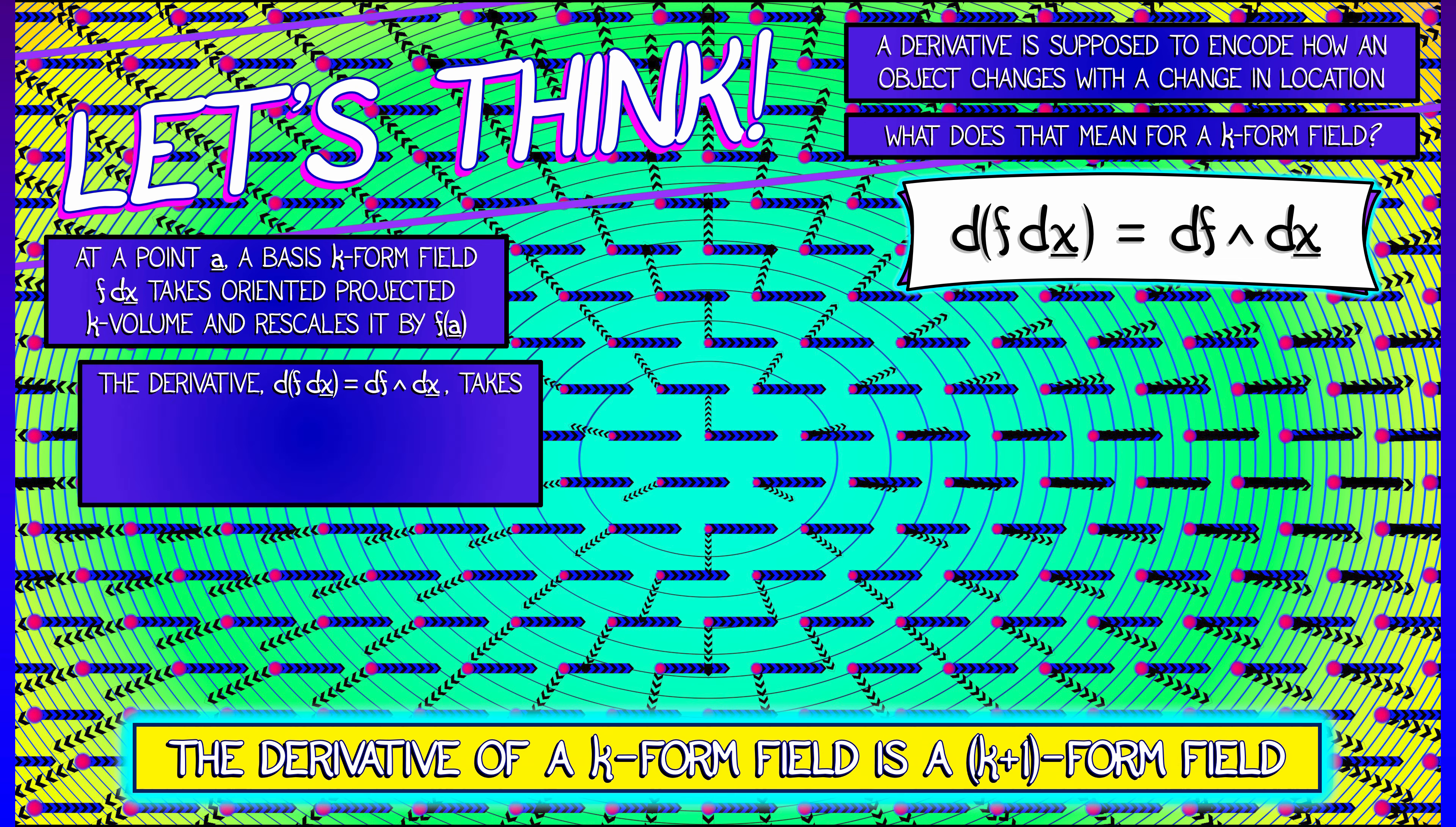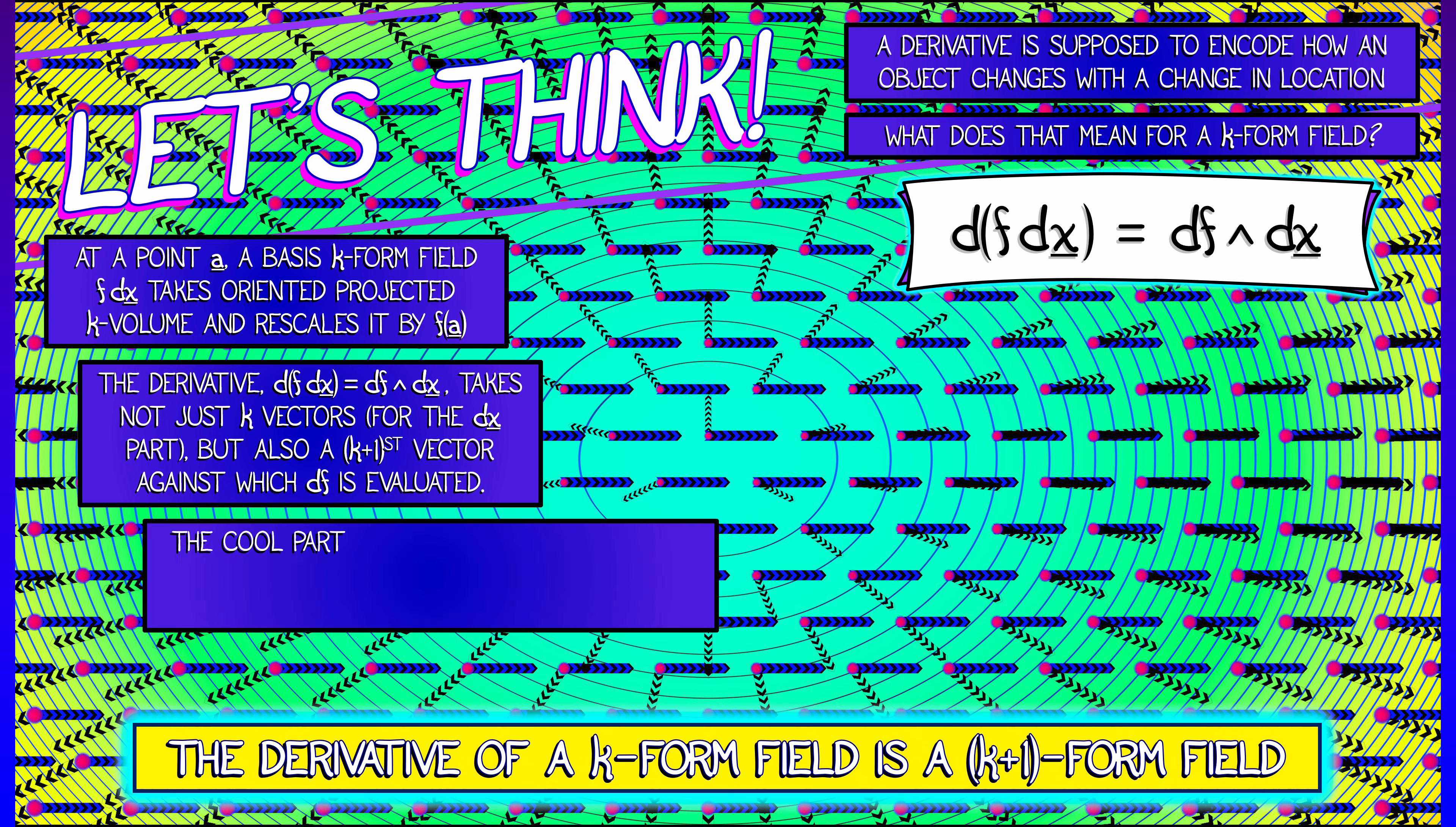Now, if you take the derivative of f dx, you get df wedge dx. It's a k plus one-form field. That means it takes in not just the k vectors for the dx part, but also a k plus first vector against which you evaluate df. You measure how this whole thing changes as you move in that last direction.